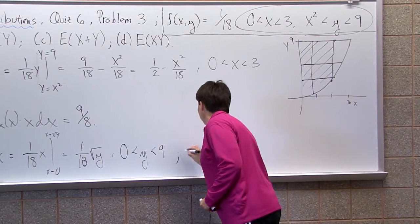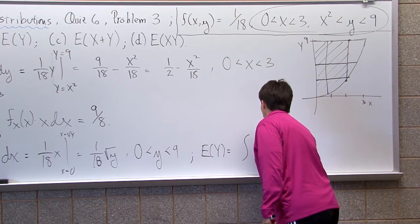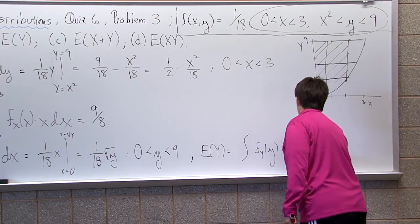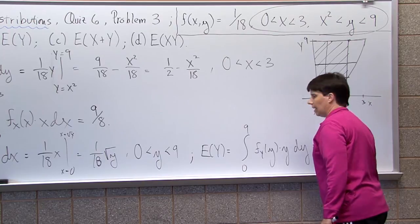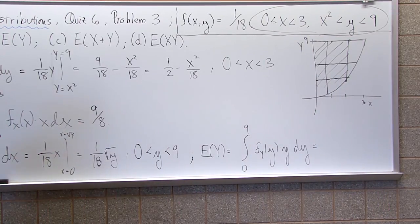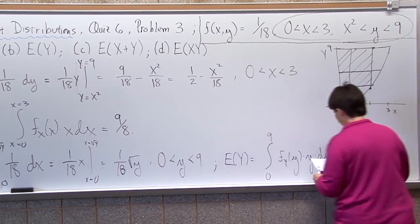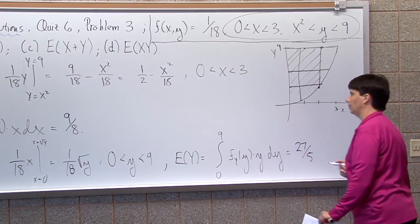Expected value of y should just be f(y) times y dy, and my y's go from 0 to 9. I did this before I came. I got 27/5 for expected value of y.